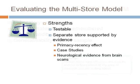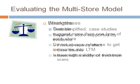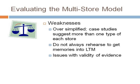Back to the multi-store model. You will need to be able to evaluate this model. Its strengths are that it is testable — its simplicity means you can actually look for separate stores, and there is evidence of separate stores. This comes from the primacy-recency effect, case studies, and neurological evidence from brain scans. Its weaknesses, however, are that it is oversimplified. Case studies suggest there is more than one type of each store, so memory must be more complex than this model implies. In addition, we don't always rehearse information to get it into our long-term memories — some things are instantly remembered. And also, if the evidence that the model is based on is flawed, then this causes a problem for the theory.